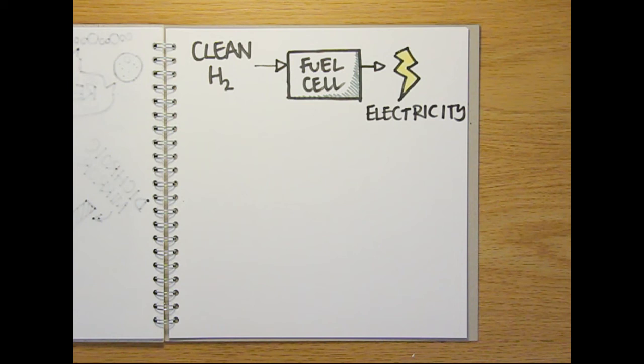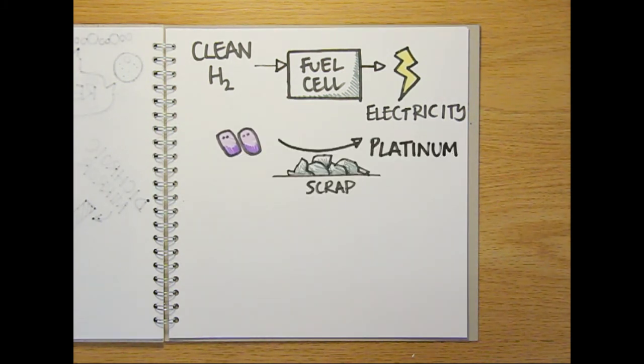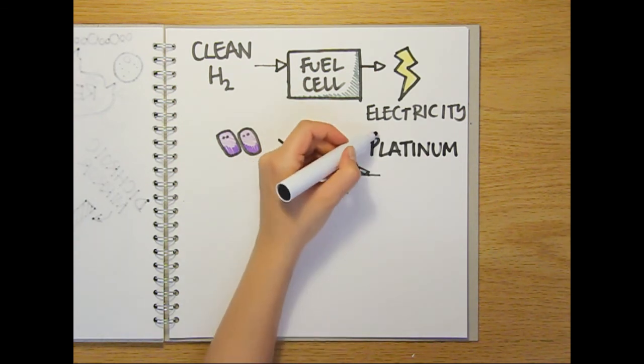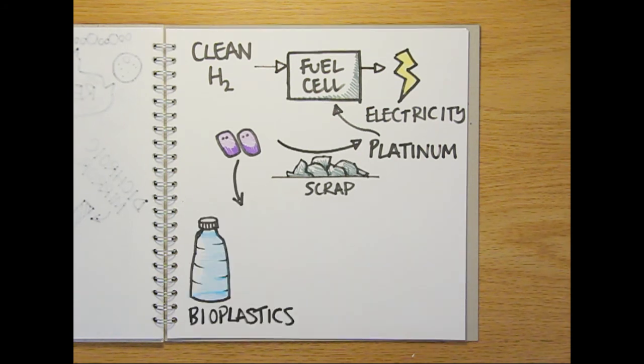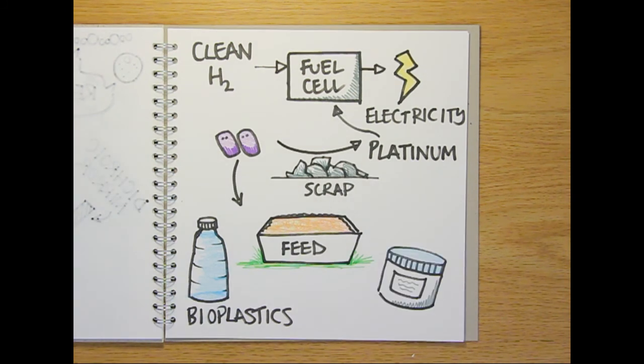But that's not all. The purple bacteria can also be used to recover precious metals like platinum from scrap. This can be recycled to make catalysts for the fuel cells that consume the hydrogen the bacteria produce. They can also be used to produce bioplastics, and the carotenoids and proteins they contain can be used for animal feed and cosmeceuticals.